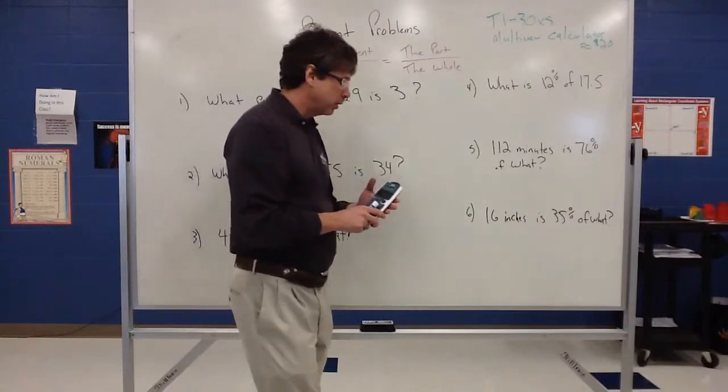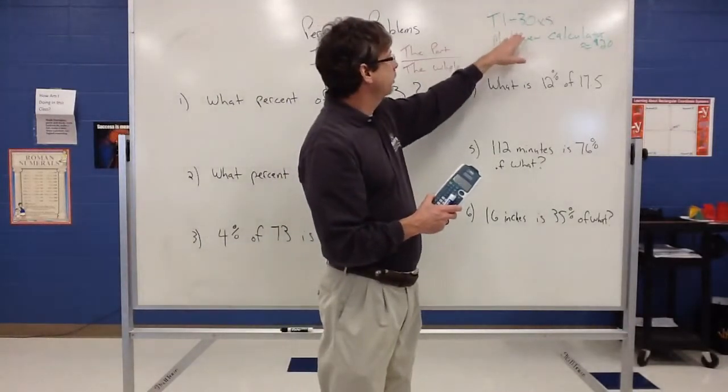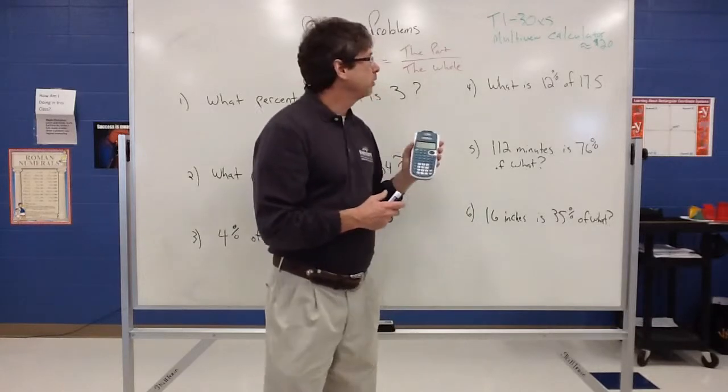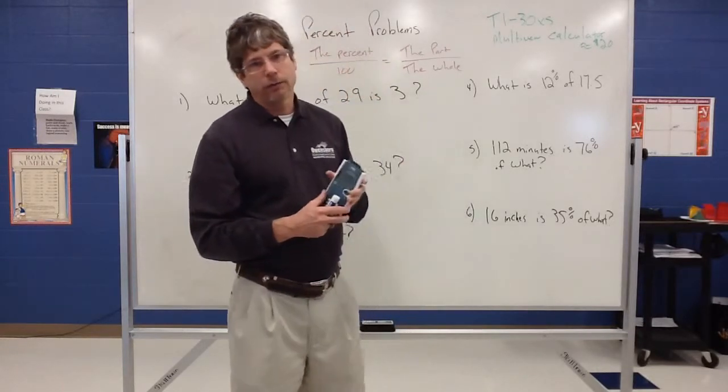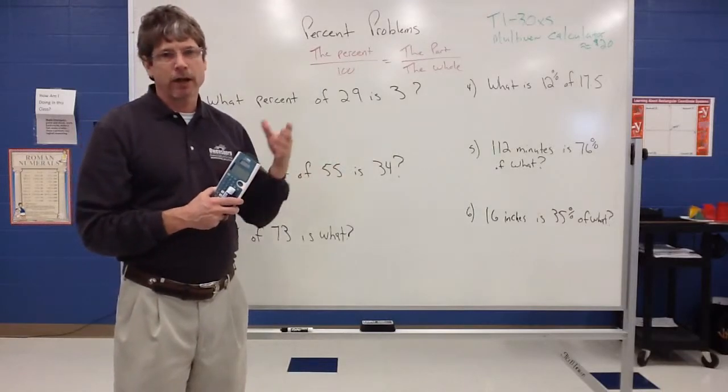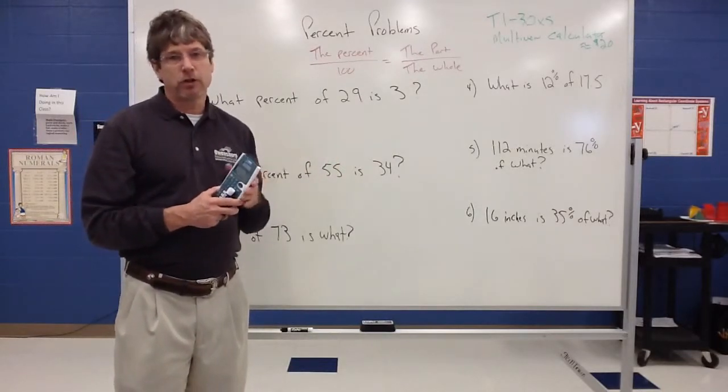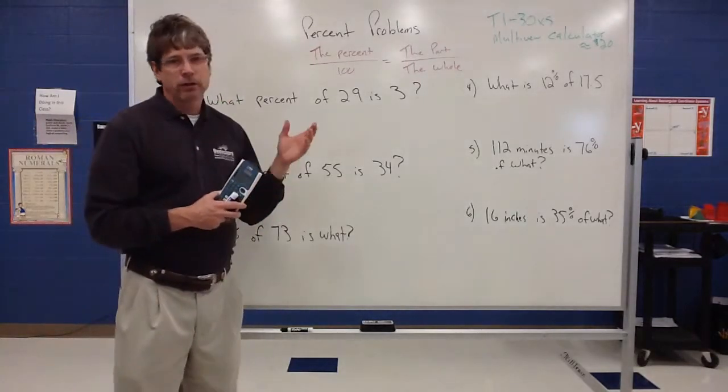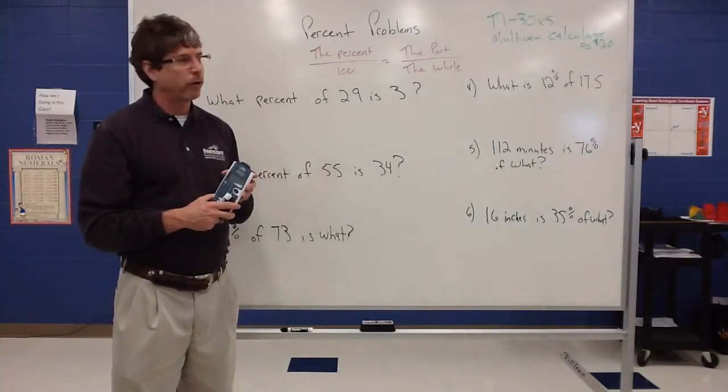A calculator that we would recommend is the TI-30XS multi-view calculator. You can get it most places for under $20, like Walmart, you can even probably get it online and have them send it to you or pick it up at the store. A lot of options. I think the community college bookstore also sells it for right around $20.